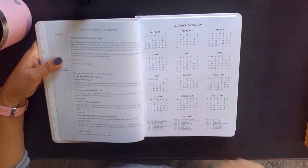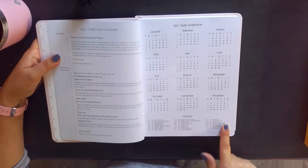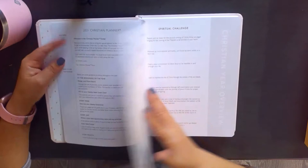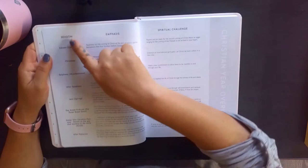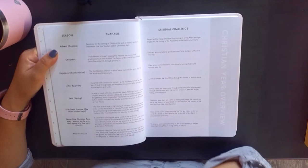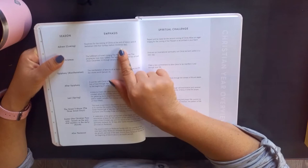It has a year overview with the holidays listed down below, and then it has a Christian year overview which is pretty cool. So here it has season, emphasis, spiritual challenge. So the season is Advent and the emphasis is readiness for the coming of Christ at the end of history and at Bethlehem, the four Sundays before Christmas Day. And the spiritual challenge is repent and be ready for the second coming of Christ, allow an eager longing for the coming of the Messiah to be birthed in your heart.